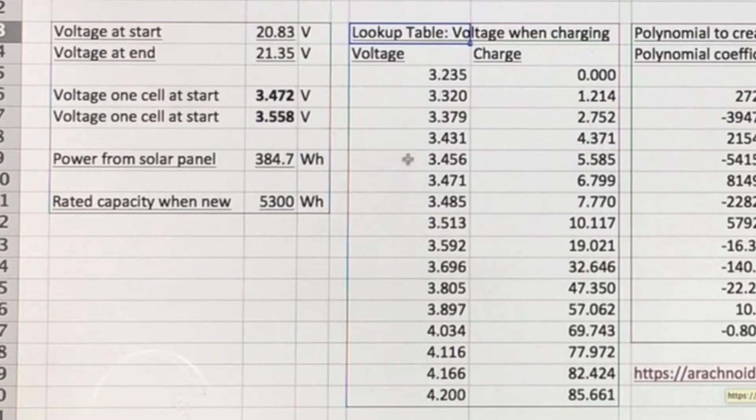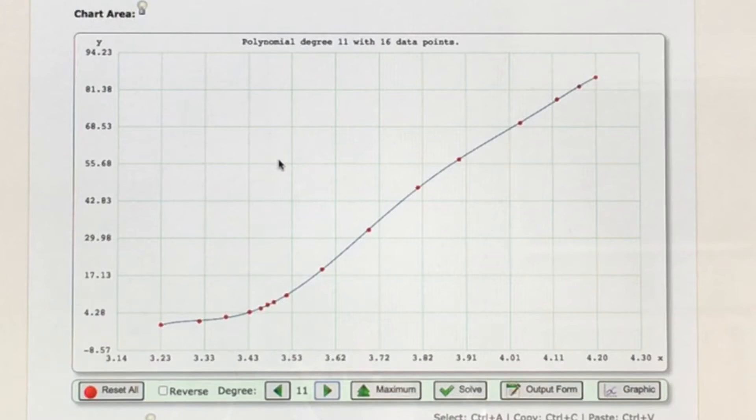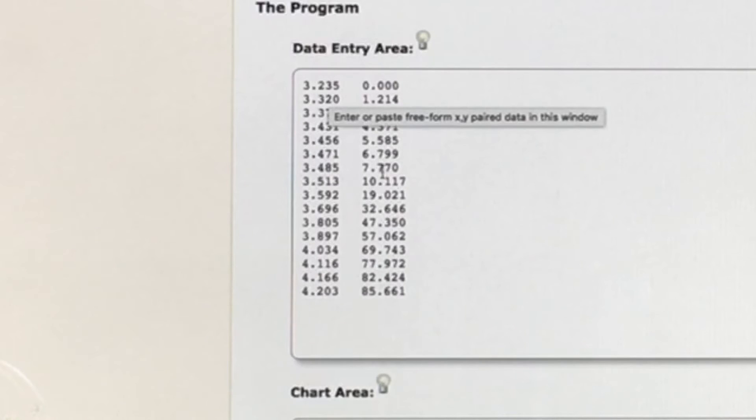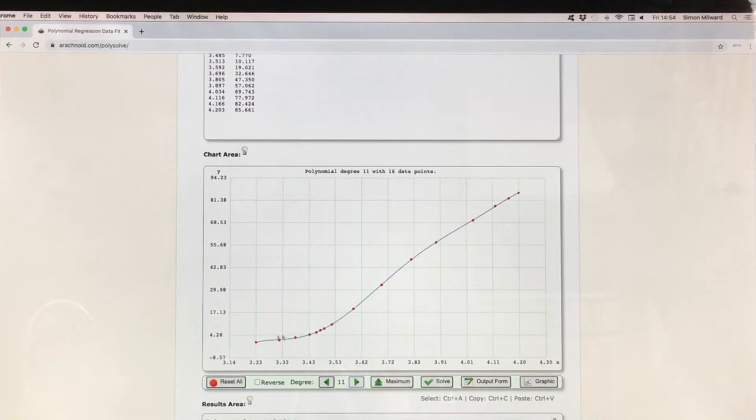And to do this I've created a polynomial equation which shows the continuous graph of voltage against charge. I've done this through a simple website. So this website you put in voltages against charges here and it creates the graph of the dots and then it'll create various polynomials to try to approximate that as close as possible.